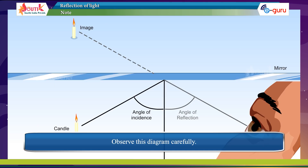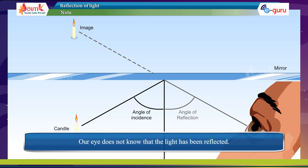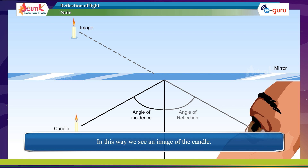Observe this diagram carefully. The ray of light from the candle is reflected at the mirror and bounces off at the same angle as it comes to the mirror. Our eye does not know that the light has been reflected. Our eye sees the object in the mirror and feels that light is coming from that candle which seems to be behind the mirror. In this way we see an image of the candle.